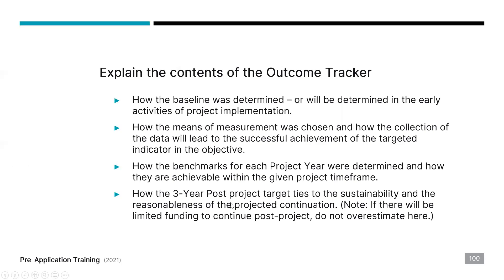Everybody thinks and measures things differently, so explain it as if you're talking to a complete stranger, so that whoever picks up your application clearly understands what you mean by the numbers in your Outcome Tracker. The three-year post-project section is tied to sustainability — you have to explain your sustainability plan and apply it to your numbers, giving your reasons for the projections.